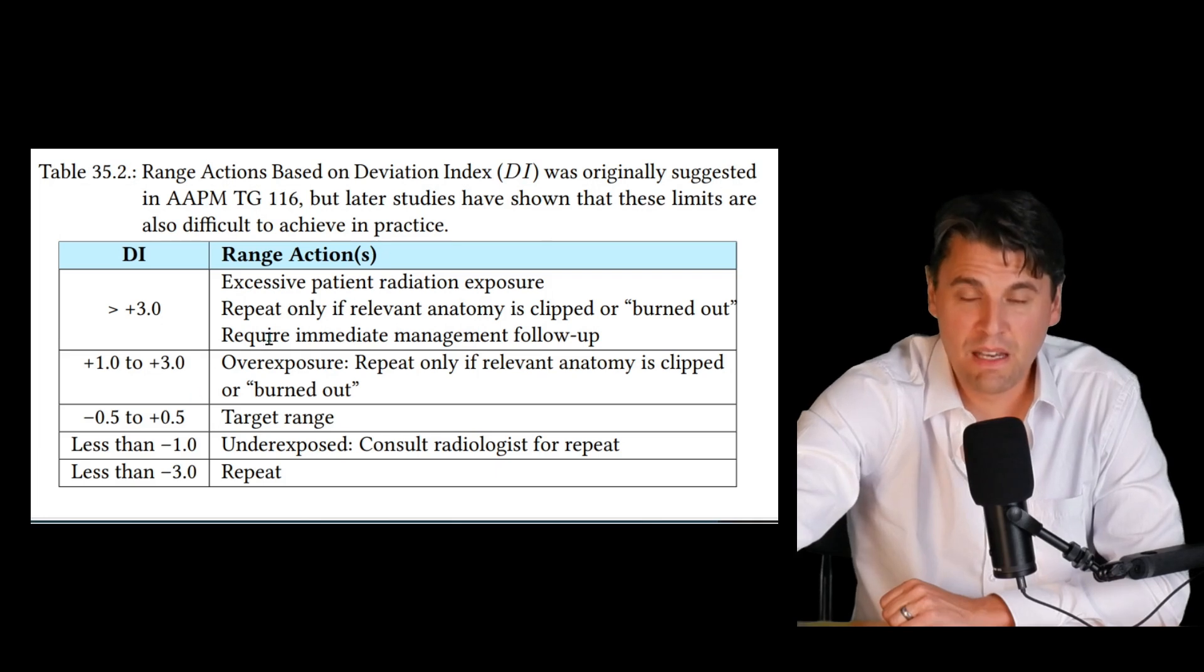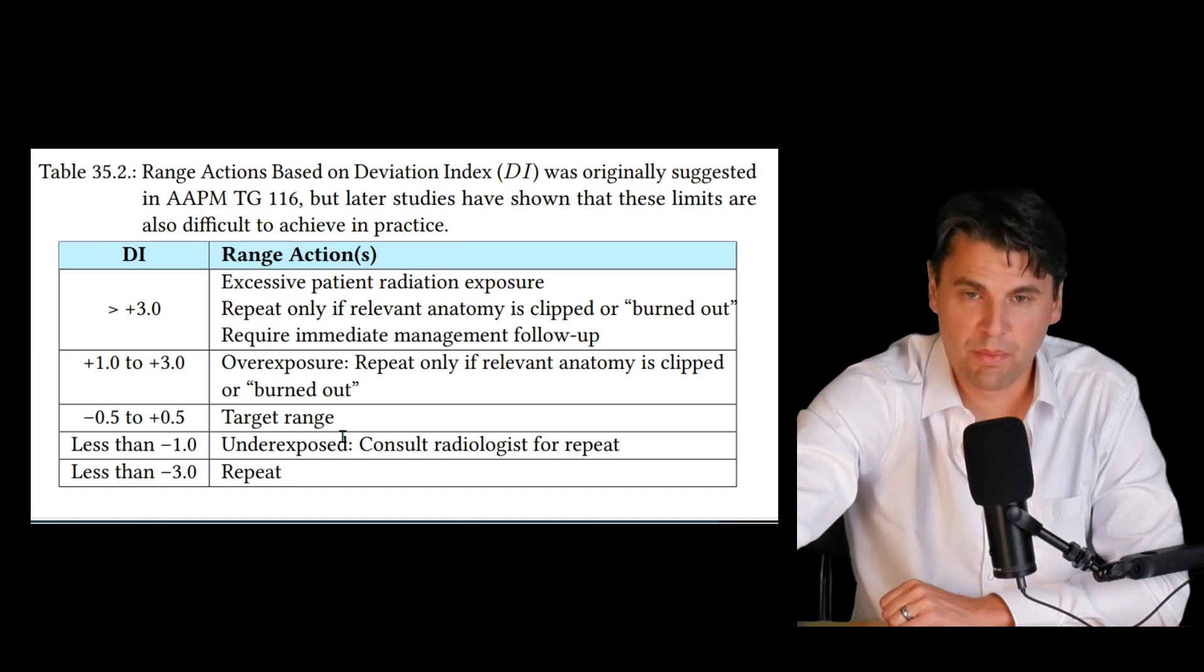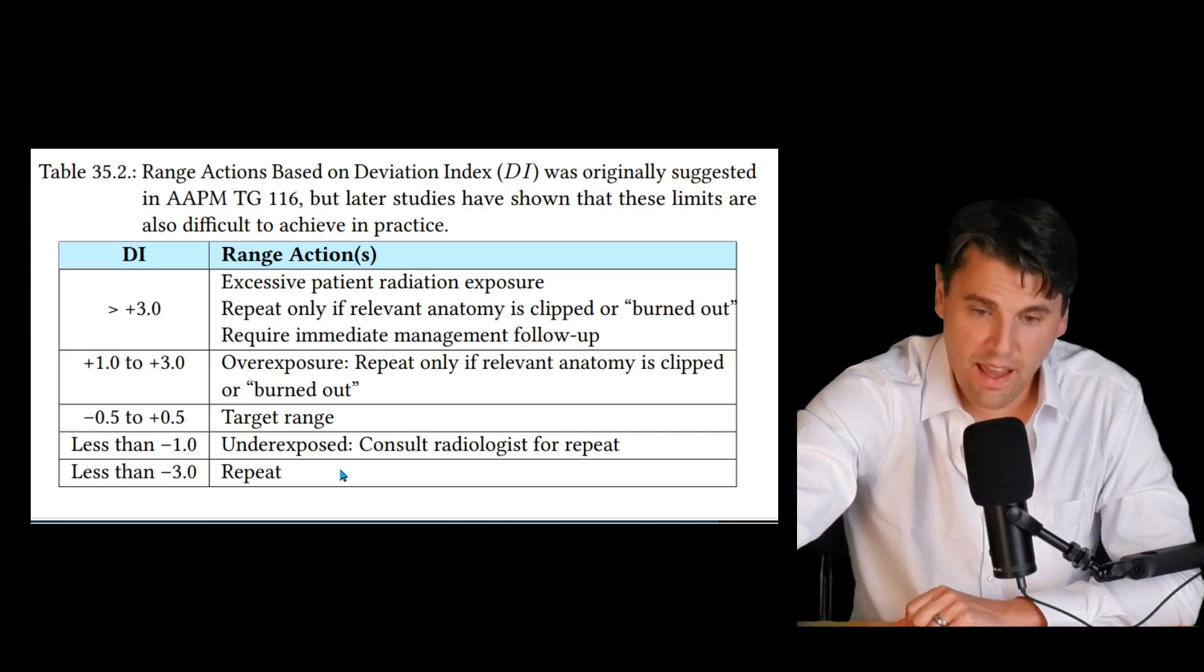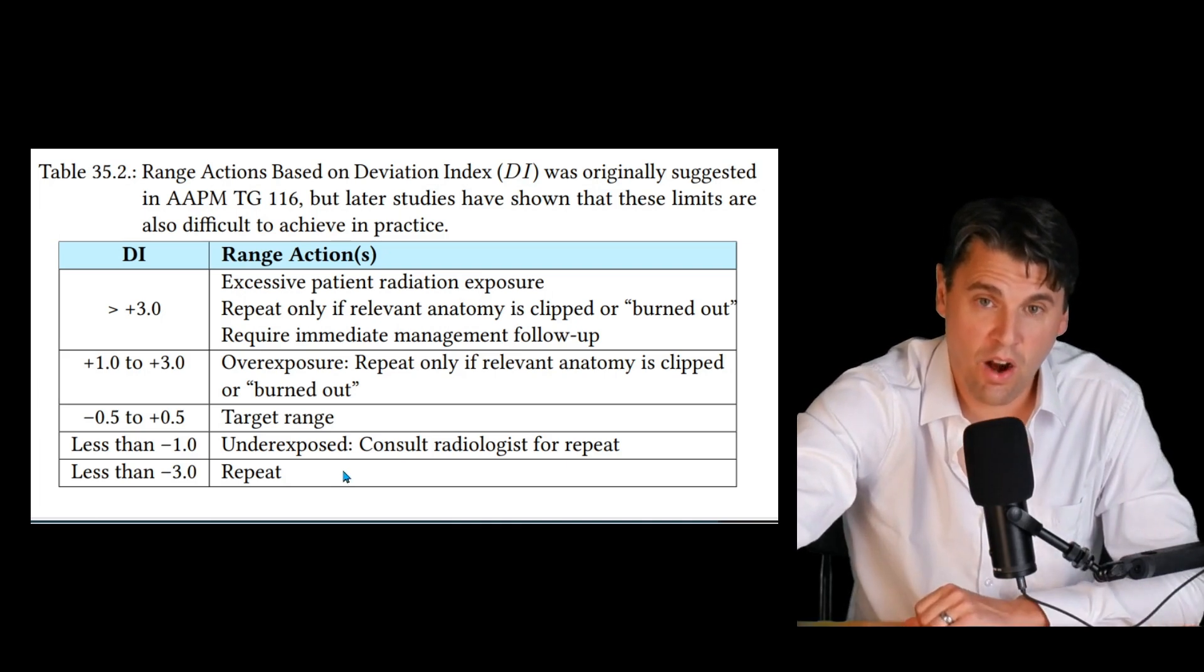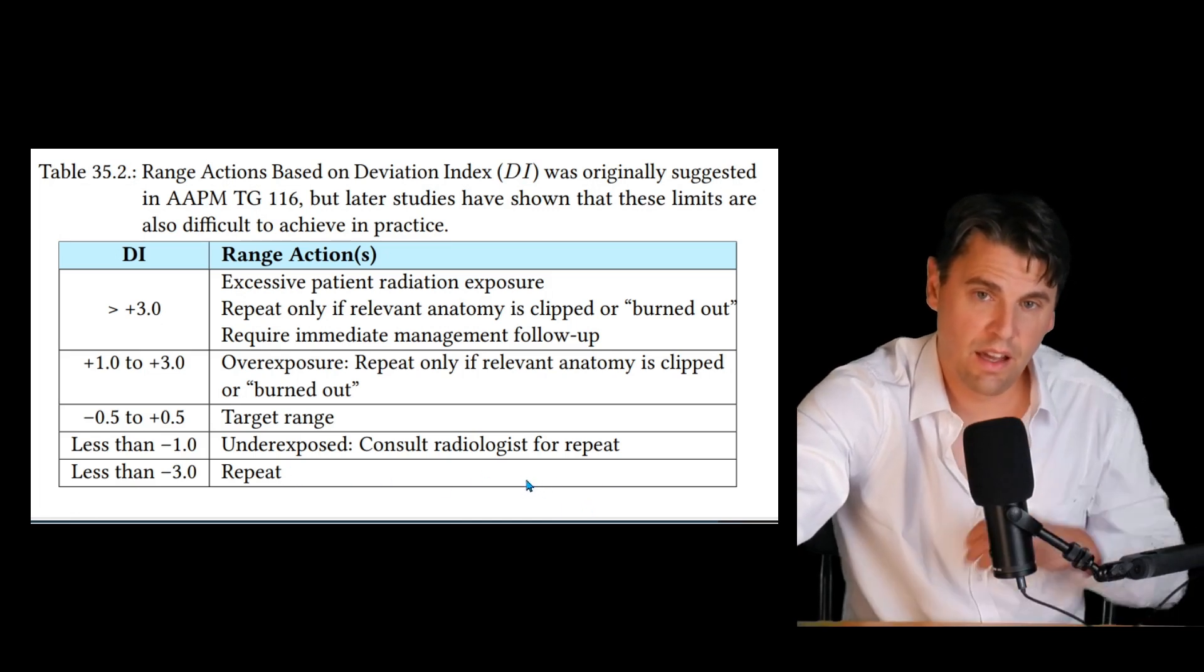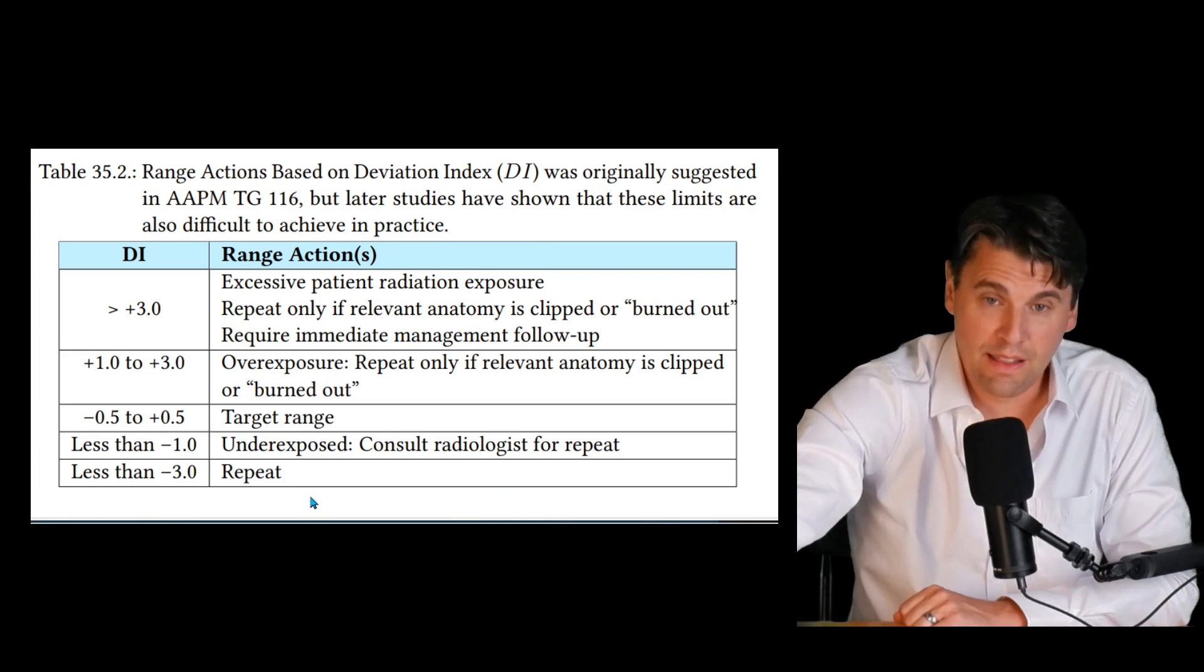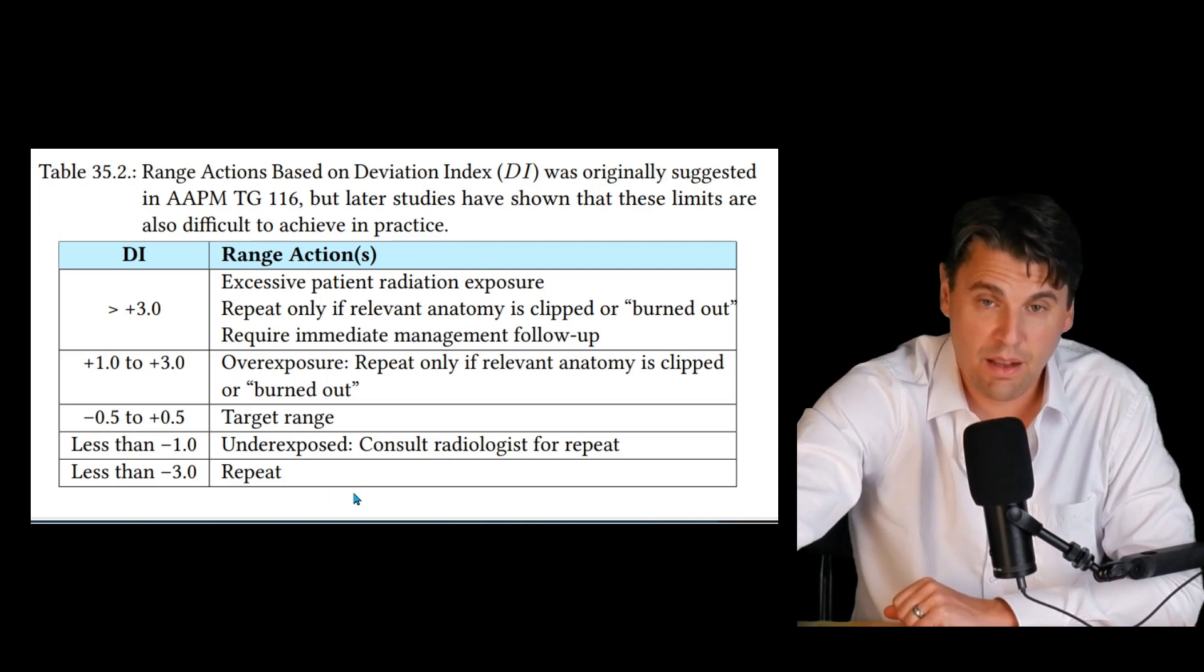There's an intermediate range from a DI of one to three, where it's kind of like a monitoring, only reacquire if really necessary here. And you had a target range of minus one-half to plus one-half, you really like to be in that tight range, ideally. And if you're underexposed, if you're less than minus one on the DI, the images are going to be noisier. The idea would be you would consult your radiologist and see if the image is readable, or if you would need to repeat. And if you were less than minus three, less than one-half of the exposure intended, the recommendation would be to repeat.